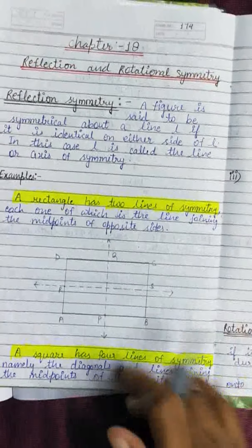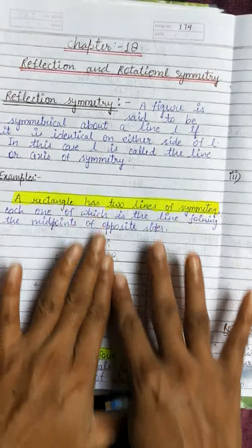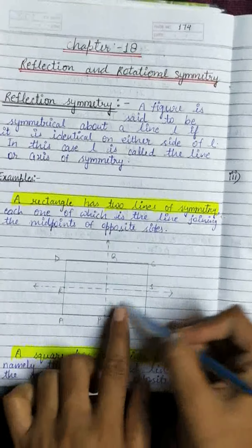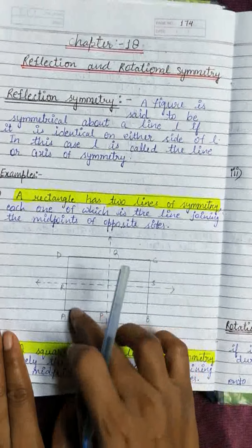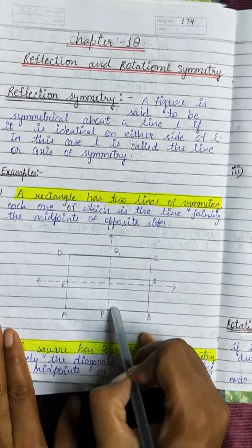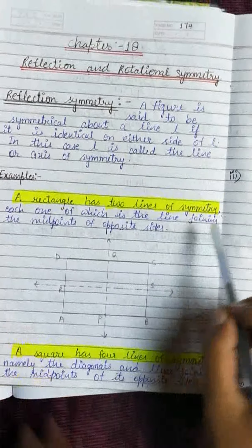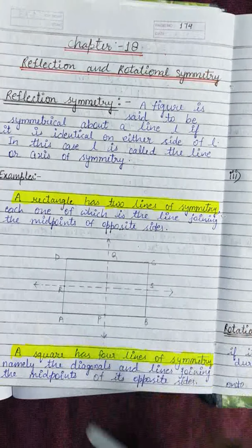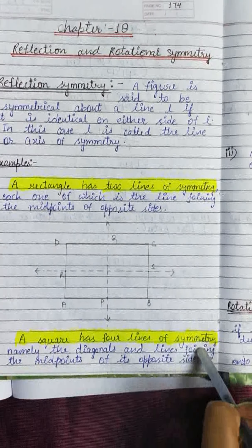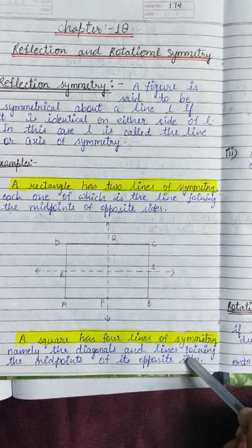For example, a rectangle has two lines of symmetry. If you draw a line along the rectangle and check, this side and that side are equal. Similarly, the other line also gives equal halves, so both are lines of symmetry. A rectangle has two lines of symmetry.